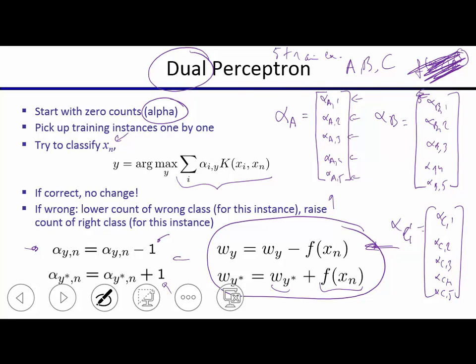As you start the algorithm, each alpha vector is initialized to all zeros. When the first training example comes in, you check the scores — all zeros means a tie. Assuming you classify wrong and the first example is class A but you classified it as B, alpha_A1 becomes plus one to increase the score, and alpha_B1 becomes negative one to decrease the score for class B on that example. For each subsequent example the same thing happens: correct label gets nothing, wrong prediction gets plus/minus one updates.